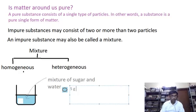5 grams of sugar and 10 grams of water. That means this solution has a total mass of 15 grams, out of which we have 5 grams sugar and 10 grams water.